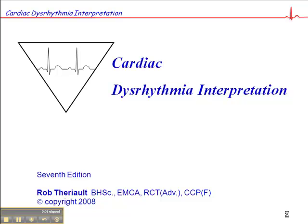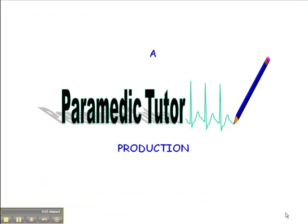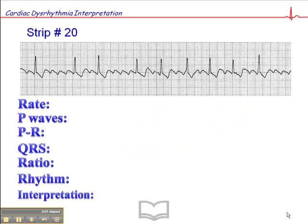Turn to page 94 — this is ECD exercise number 20. The heart rate here is approximately 96. You'll notice that the rhythm is a little bit irregular, and we'll get to that in a minute.